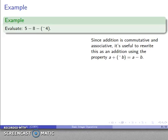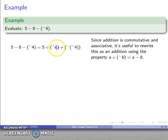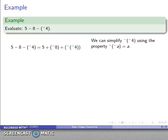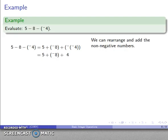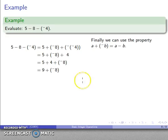For 5 minus 8 minus negative 4: the rules of integers allow me to convert subtractions into additions. So 5 minus 8 becomes 5 plus negative 8, and minus negative 4 becomes plus negative negative 4. Using the property that negative negative a equals a, negative negative 4 is just 4. Now I have an addition I can write in any order: I'll put the non-negative numbers first — 5 plus 4 is 9 — with the negative number at the end. Then 9 plus negative 8 equals 9 minus 8, which equals 1.